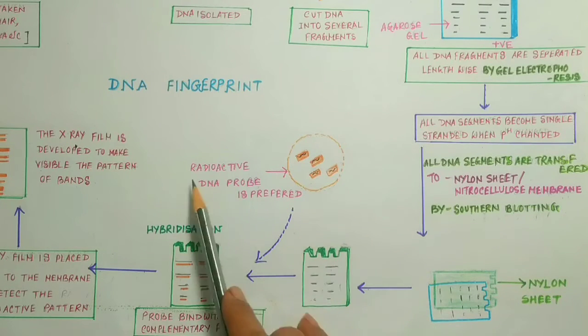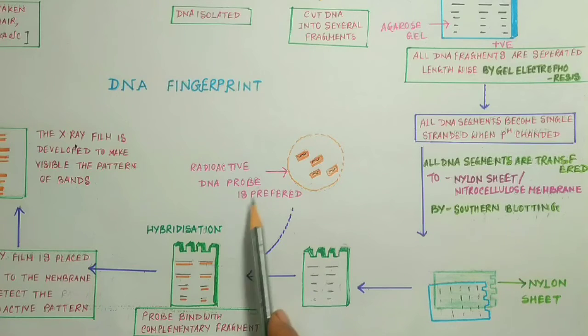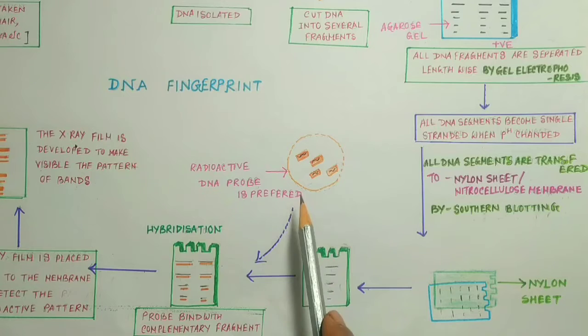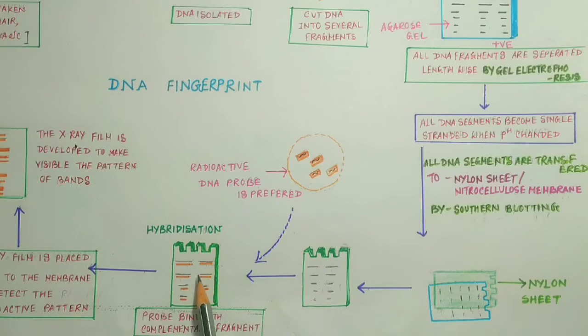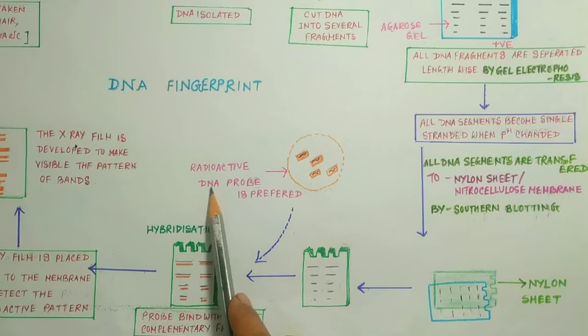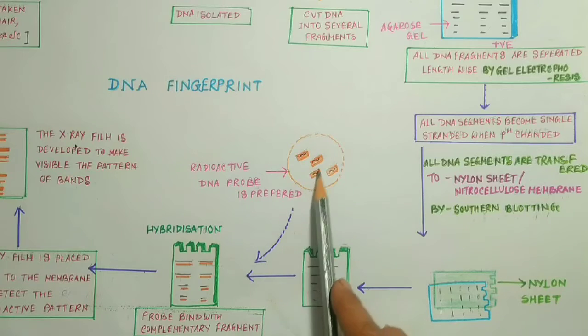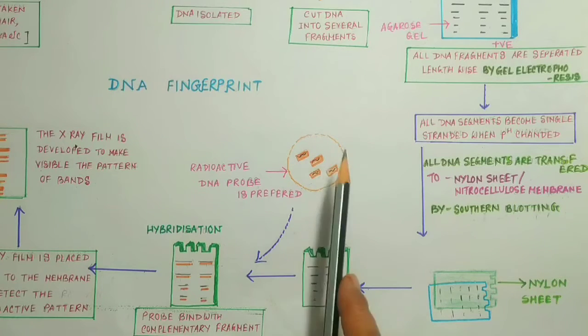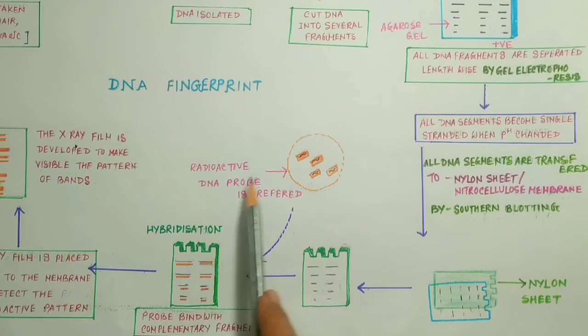In the meantime, in the laboratory, radioactive DNA probe is also prepared. Then this process is followed by the hybridization of DNA using this radioactive DNA probe. This radioactive DNA probe binds with the complementary DNA strand. Finally, they are arranged like this pairwise. This black color is the original DNA, and this orange color is the laboratory-prepared DNA probe.